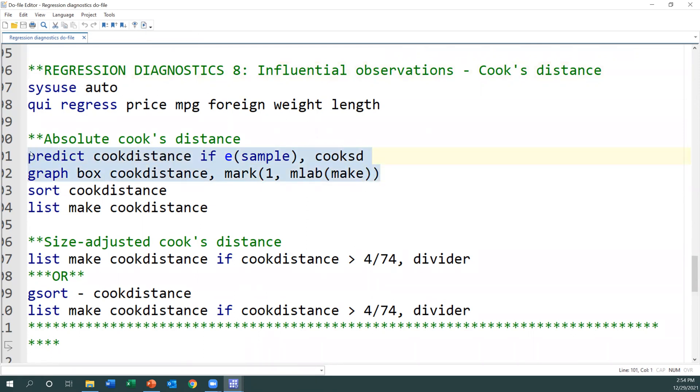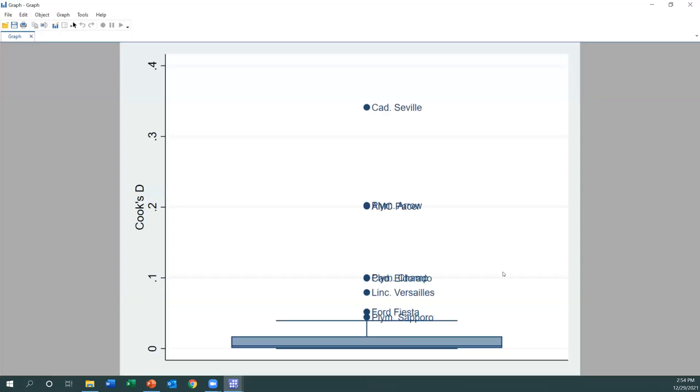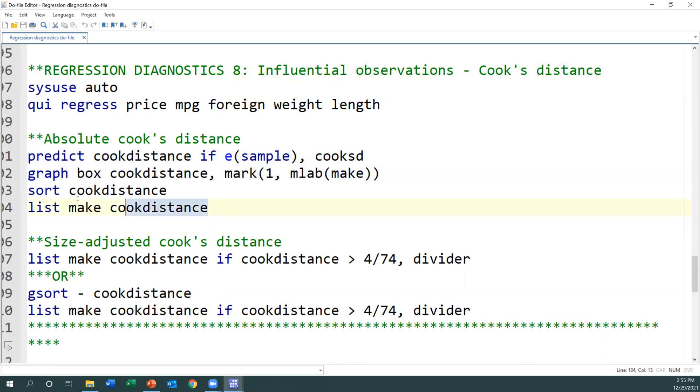The command is Cook's distance. This is what we use to produce the Cook's distance. I can use any kind of variable name, but a new variable will be produced. Now I use that one to graph. Make is the respondent, the car for each car. I will run these two commands and I'll get the graph. These are the Cook's distance for each of the cars, for each of the IDs, each of the respondents. You see that all of them are below 0.4. We said that if the value is greater than one, then we will consider them to be influential.